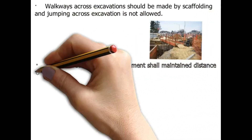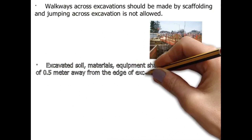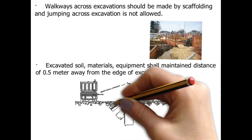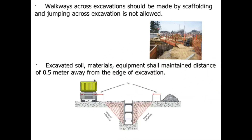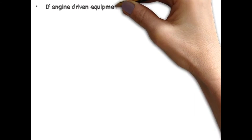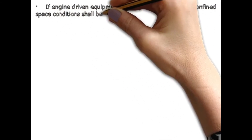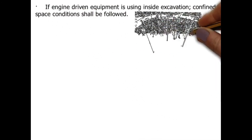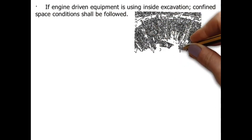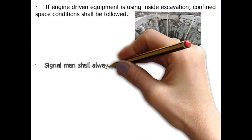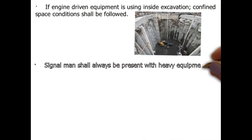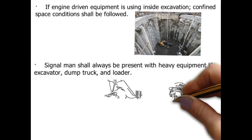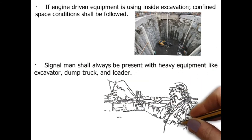Excavated soil, materials, and equipment shall maintain a distance of 0.5 metre away from the edge of excavation. If engine-driven equipment is used inside excavation, confined space conditions shall be followed. A signal man shall always be present with heavy equipment like excavator, dump truck, and loader.